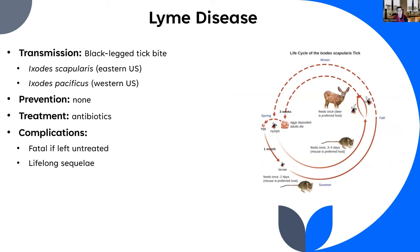Prevention includes wearing long pants, using DEET-containing insect repellent, and checking for ticks. A vaccine exists for dogs but not for humans. Treatment is antibiotics. Complications include potential fatality if untreated, and lifelong sequelae — signs and symptoms remaining after the disease is cured — including permanent damage to the nervous system, joints, or other tissues, even with appropriate treatment.